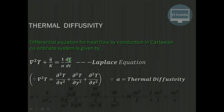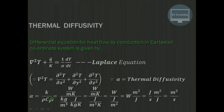This term ∂T/∂t takes into consideration whether it is a steady state or unsteady state condition. But the important term for us is alpha (α), known as thermal diffusivity. It is defined as the ratio of thermal conductivity to ρ·c (density times specific heat). Thermal conductivity has units of W/(m·K), density is kg/m³, and specific heat is J/(kg·K). The kg units cancel out.